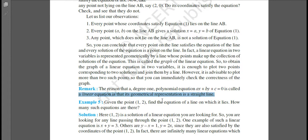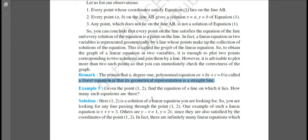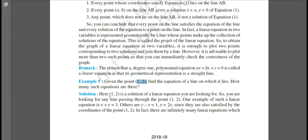Example 5: Given the point (1, 2), meaning x is 1 and y is 2, find the equation of a line on which it lies. Now how many such equations are there? How many such equations can there be where x value is 1 and y value is 2?